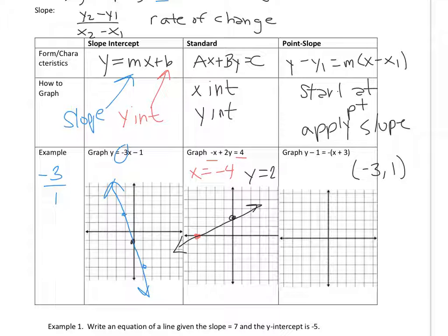So I'm going to make a point at negative 3, 1. And my slope is the value that's in front of the parentheses. So this is a negative 1. So I'm going to go down 1, right 1, up 1, left 1, down 1, right 1. This is my slope. So you should be able to graph a line in each of the 3 different forms.